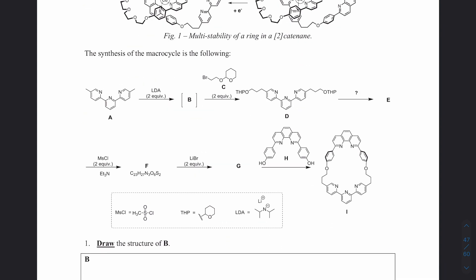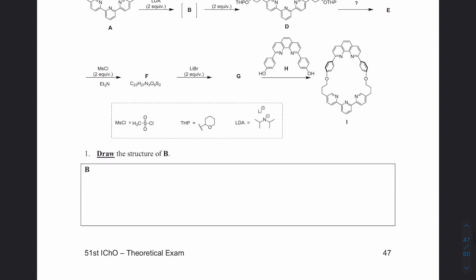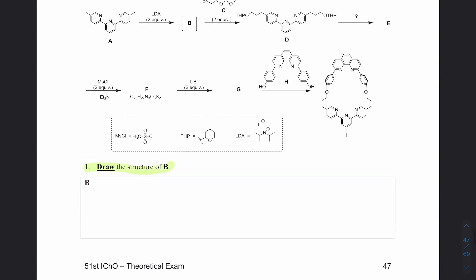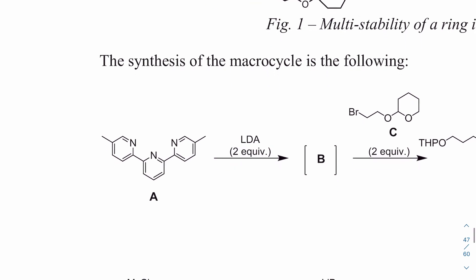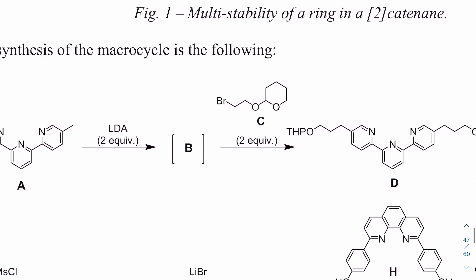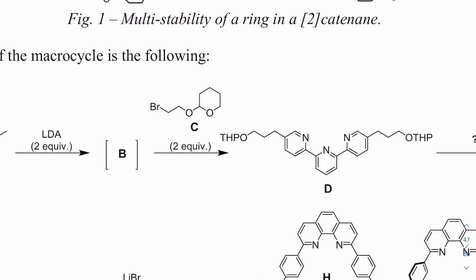Question one: draw the structure of B. We have this tripyridine-looking compound reacted with two equivalents of LDA. Just looking at it, I have no idea what's going to happen, but the reason I'm doing this video is to show you how I would go about solving these. When you don't know what's going to happen, you look forward and hope you can see things that help you solve it.